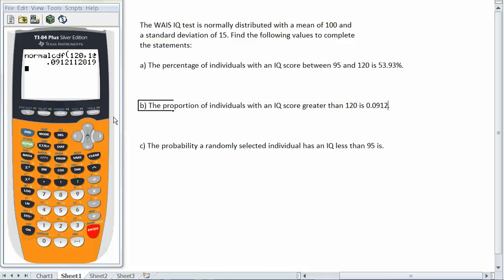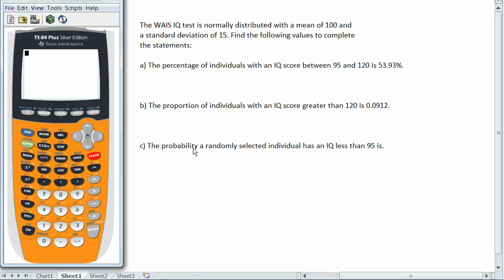Okay, now let's work on part C. Part C says the probability a randomly selected individual has an IQ less than 95 is. Okay, well now in this case, 95 is the biggest the number could be, and it could be any number less than that.